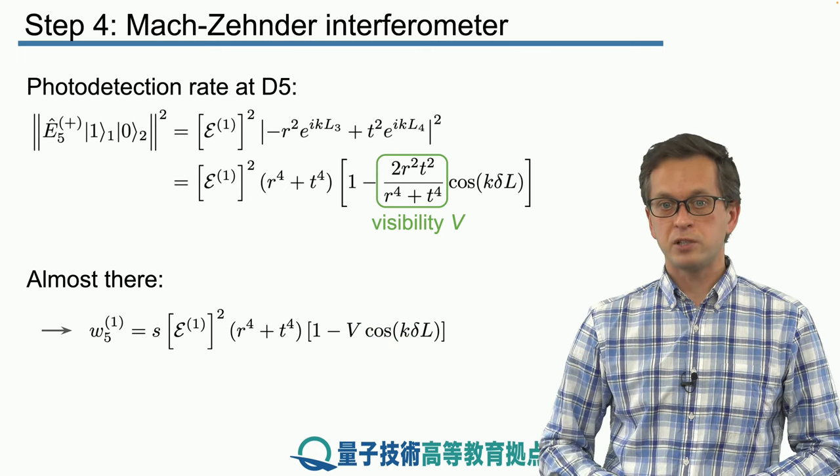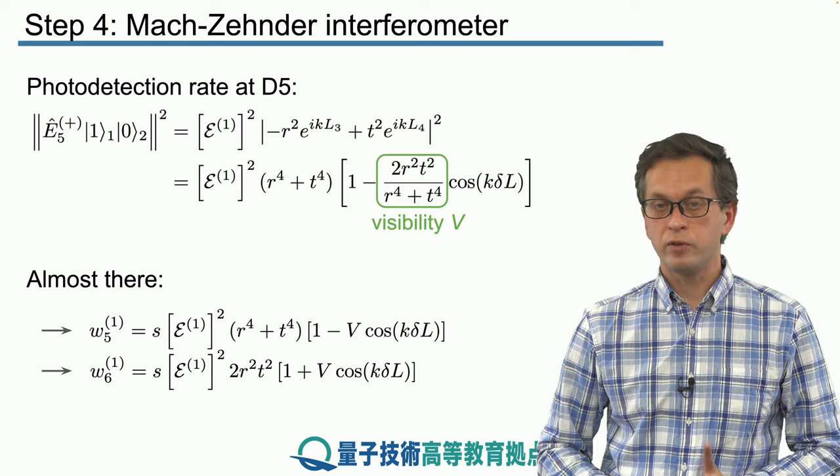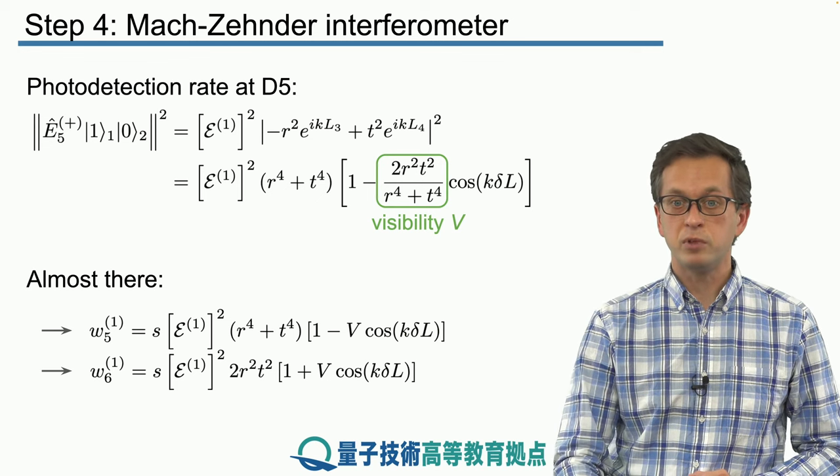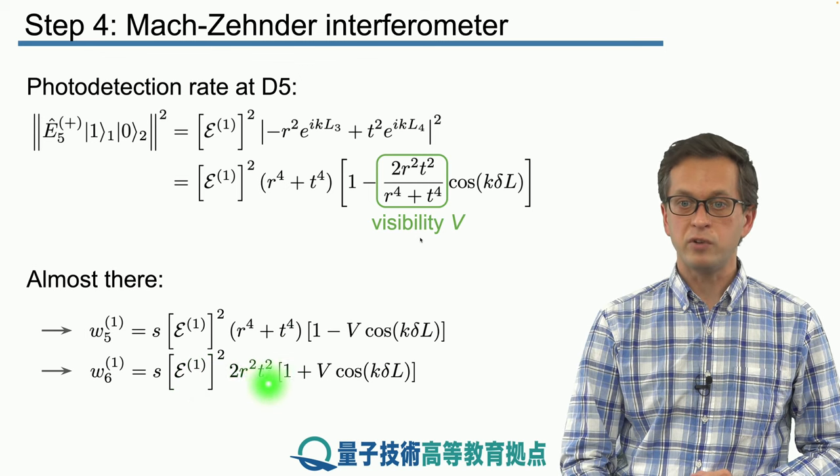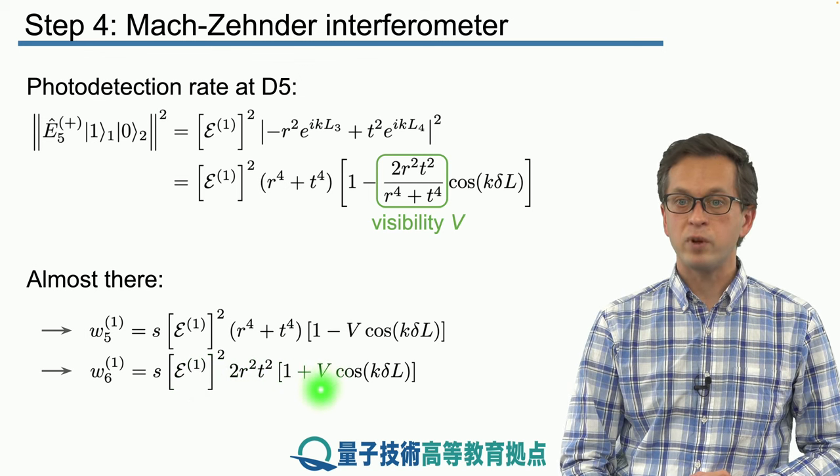You can repeat the same calculation to obtain W1 for the detector 6. And what you will find is a similar expression. The only difference here is this multiplying factor over here, and here we've got a plus.